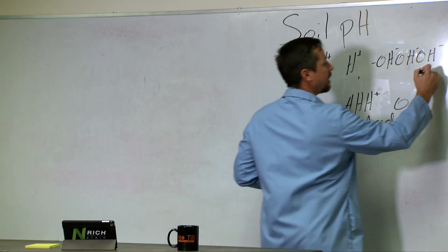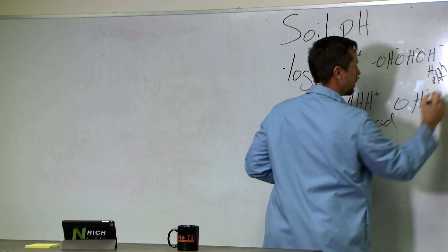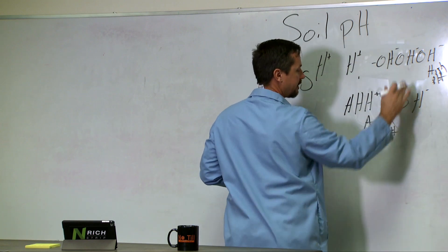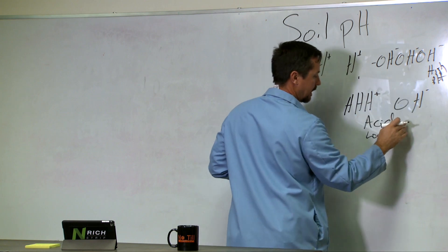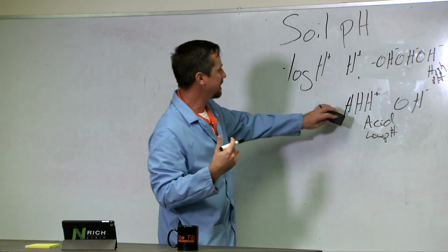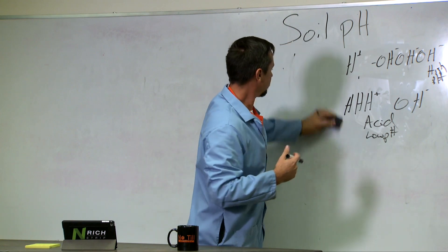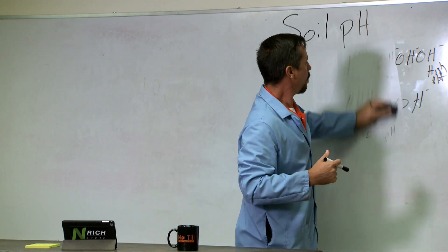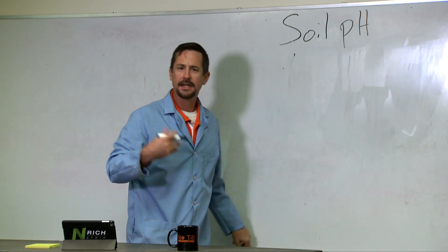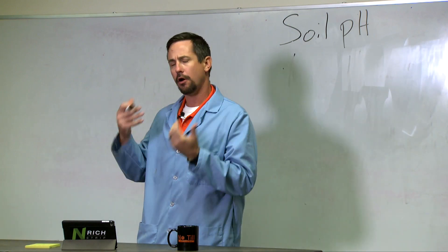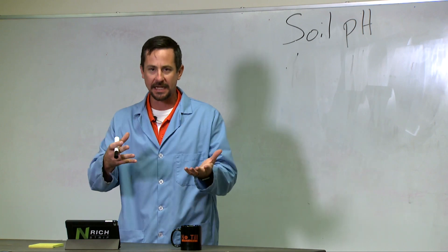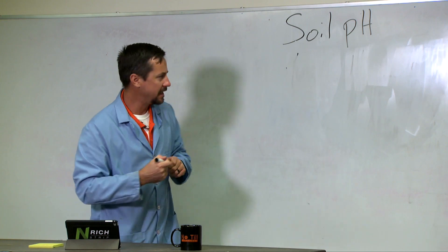So high pH is calcareous or basic, and low pH is acidic. We spend more of our time in extension talking about low pHs. One reason is that mechanically and agriculturally it is much harder, more challenging, and more costly economically to fix a high pH. So I'm going to focus on low pH.